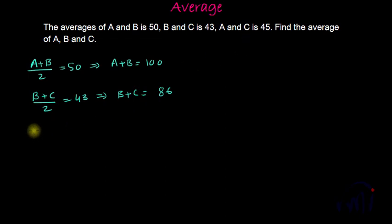And A and C is 45. That means A plus C by 2 is equal to 45, or you can say A plus C is 90. So let me call this as equation number 1, this as equation number 2, and this one as equation number 3.